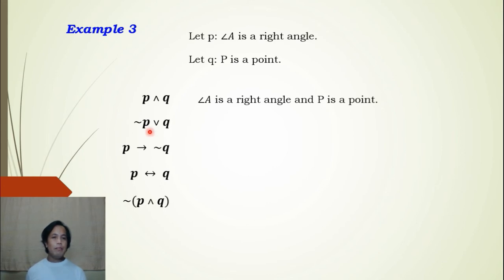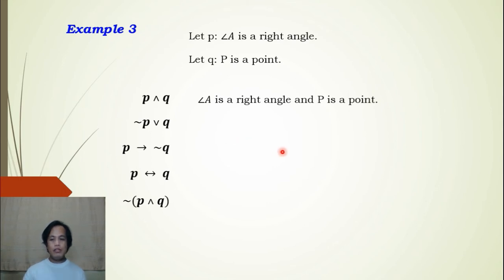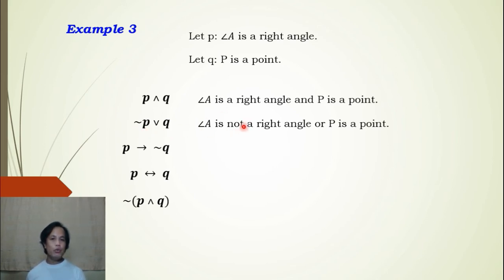Next, for ~p ∨ q, p is negated and the connective is 'or' because this is a disjunction. So we can write: Angle A is not a right angle or P is a point. We negate p but we do not negate q.